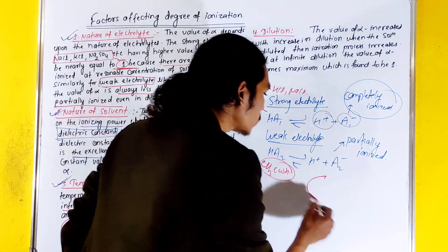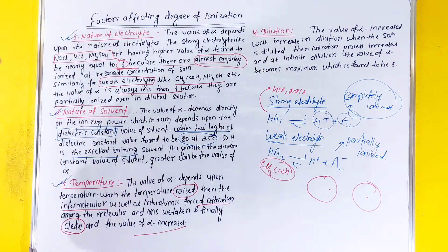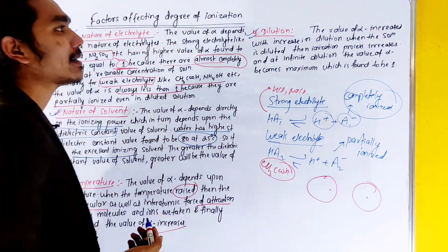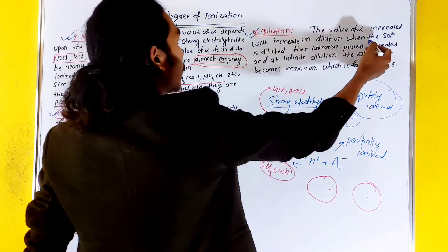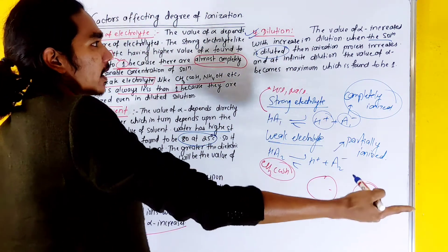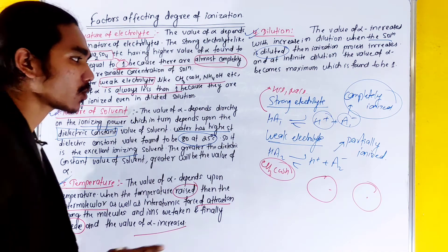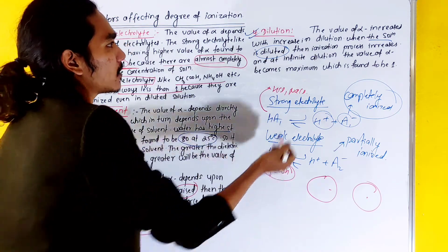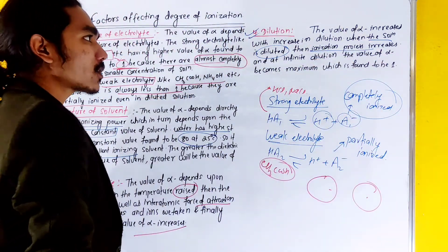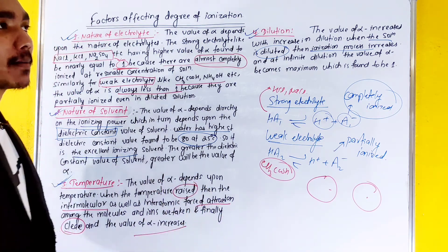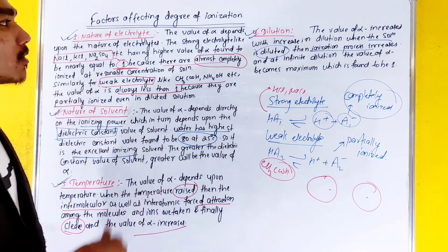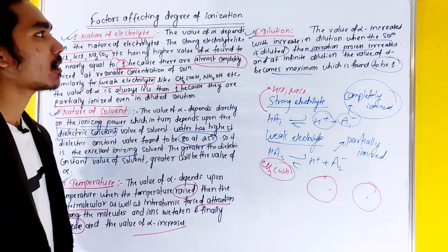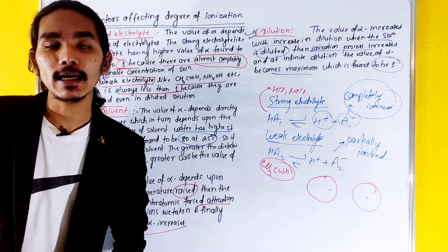Interatomic distance is increased by the molecules. So the temperature effect is that at higher temperature, the value of alpha increases. The value of alpha also increases with increase in dilution. When the solution is diluted, the ionizing process increases. At infinite dilution, the value of alpha is the maximum and found to be nearly one.